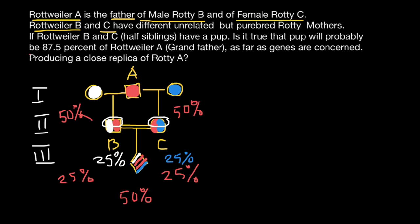So our answer is: there is no way this pup would be 87.5% the same genotype as grandfather A. It would be 50%. But now I want to show you how to actually get 87.5% in the progeny of this Rottweiler.